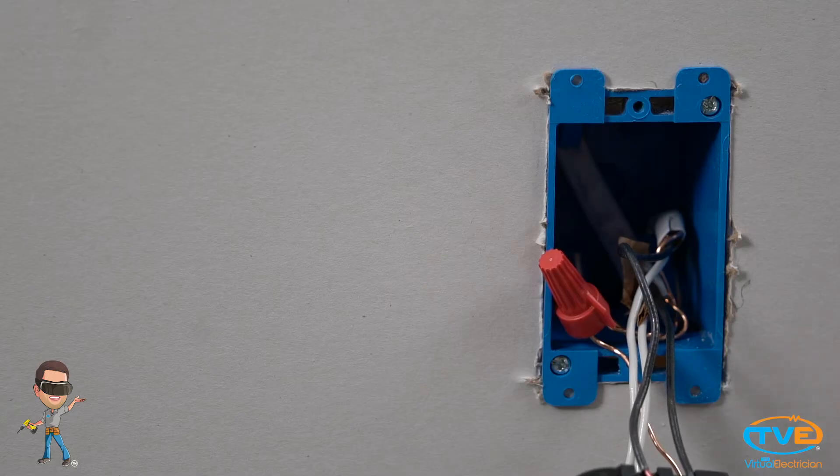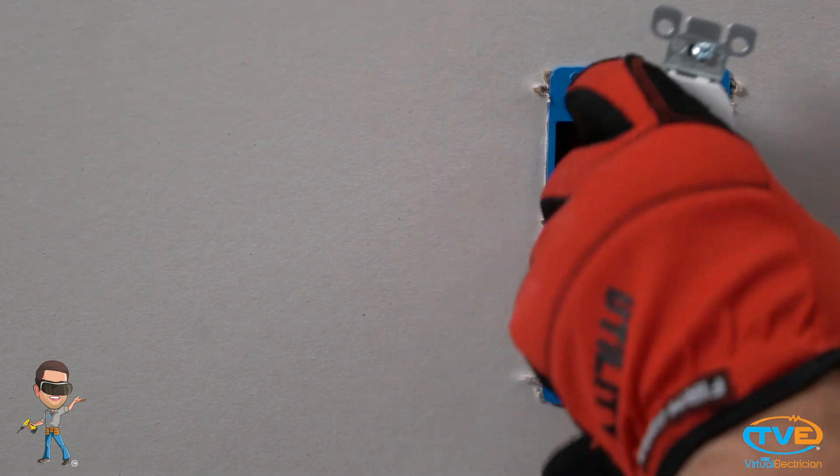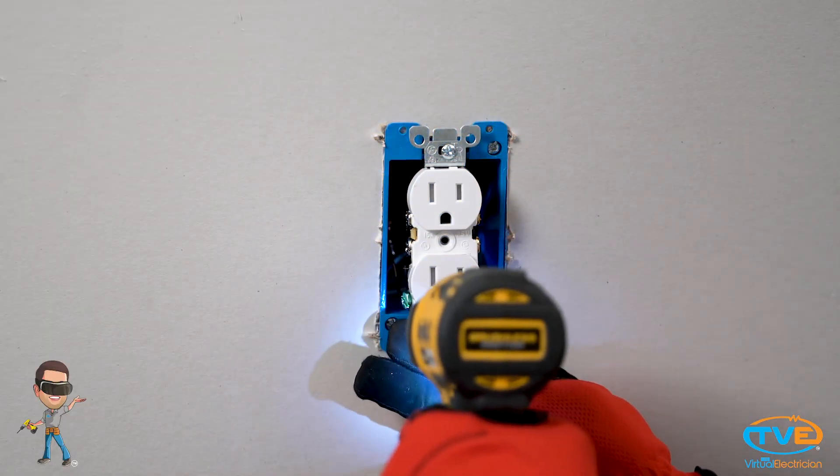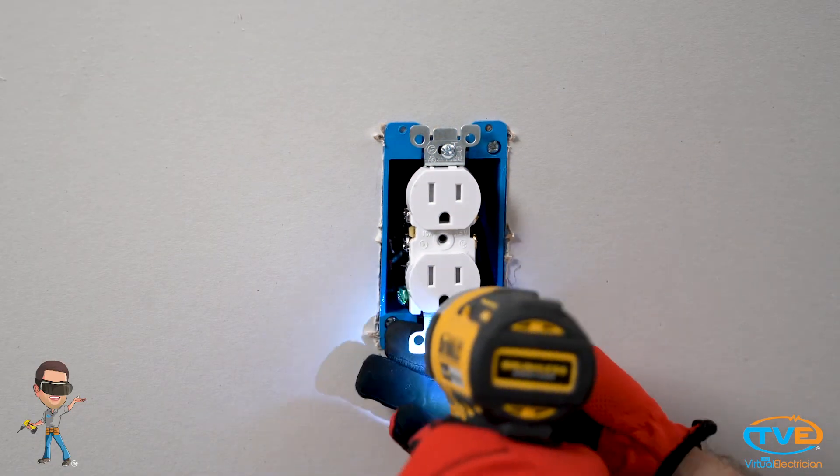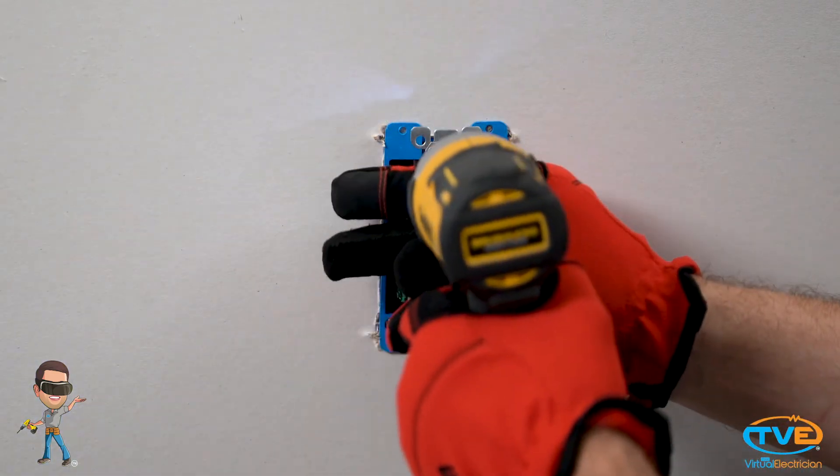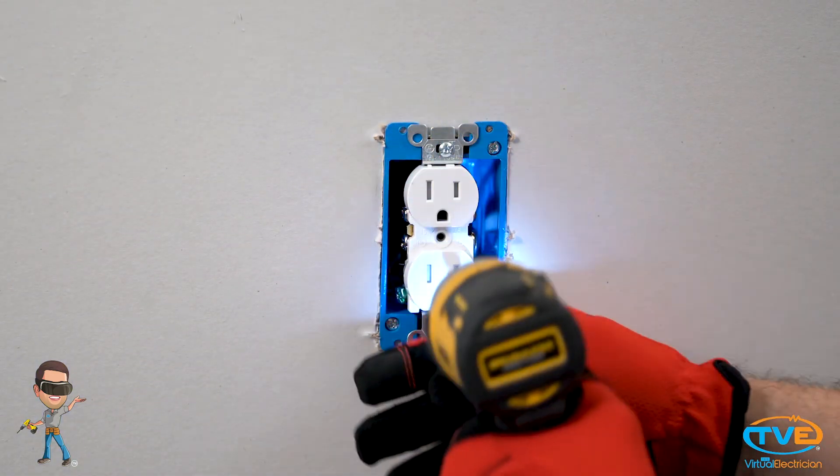Now you just screw the outlet in. Put your finger down on the wires and make an S shape as you push the wires back in the box. The ears on here are to help you get the outlet flush with the box. The ears should be flat against the box and leave enough slack on the screw where you can tap the outlet with your screwdriver to make it straight.